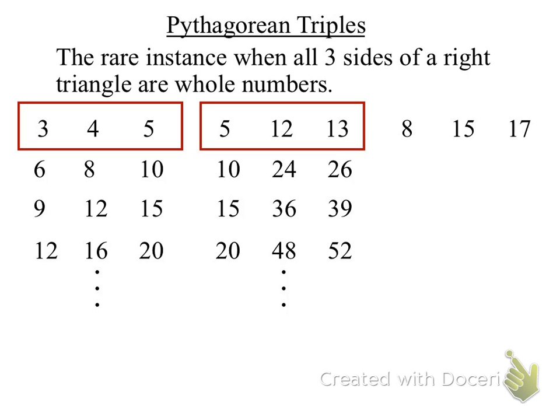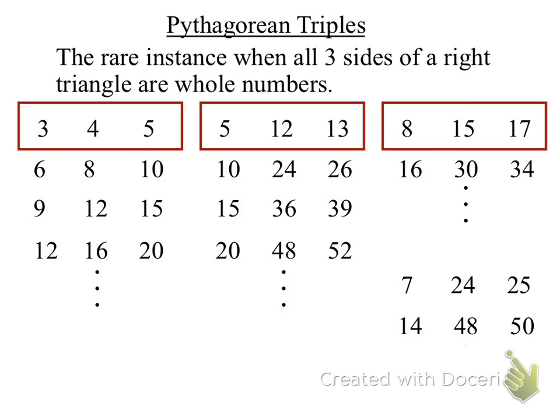And another Pythagorean Triple would be 8, 15, and 17. There's a few others, 7, 24, and 25.